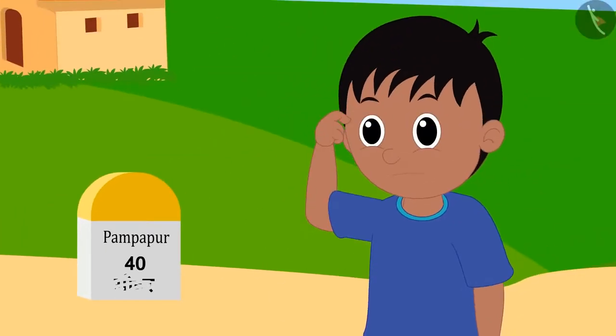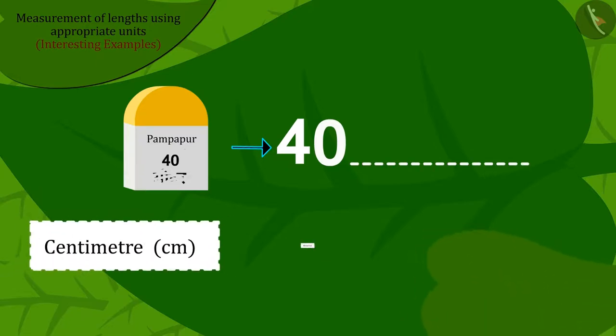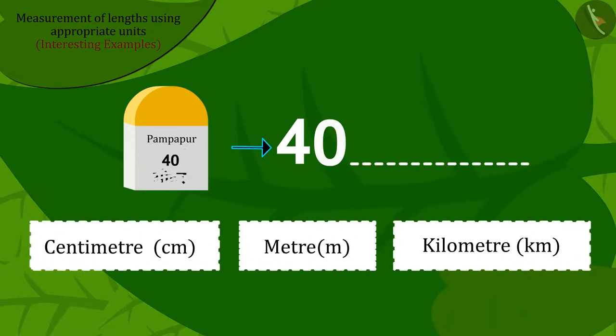Raju started thinking that the distance from Pampapur to there was written on that stone. Now, which unit should be written in front of 40, so that people going there can get the correct idea of distance to Pampapur? Kids, can you help Raju?